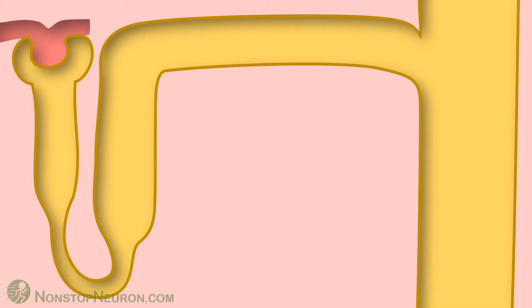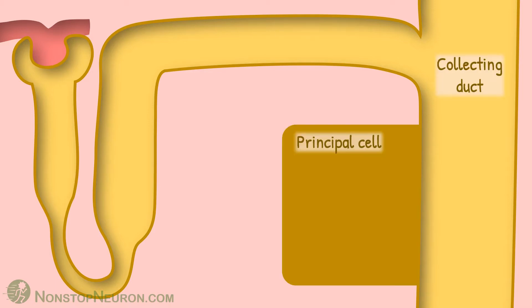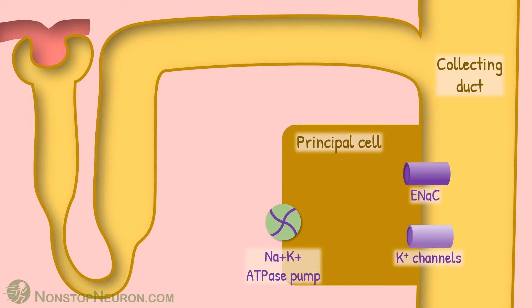First, relevant physiology. This is the nephron, this is its collecting duct, and this is the principal cell. Principal cells have epithelial sodium channels and potassium channels at the apical membrane, and a sodium-potassium pump at the basolateral membrane. And here we have sodium in the lumen.